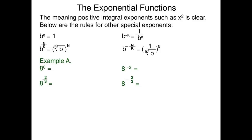Example: 8 raised to power 0 equals 1. 8 raised to power minus 2 equals 1 over 8 raised to power 2, that is 1 over 64.